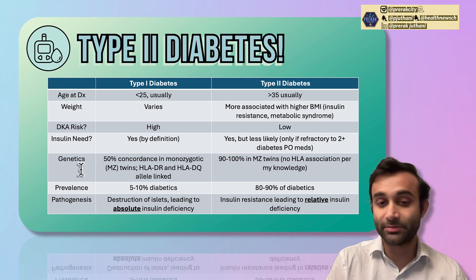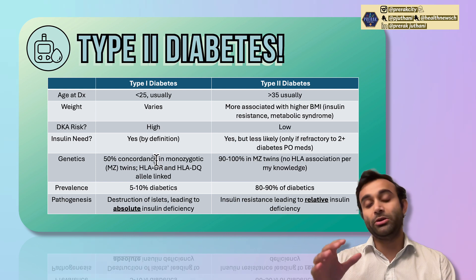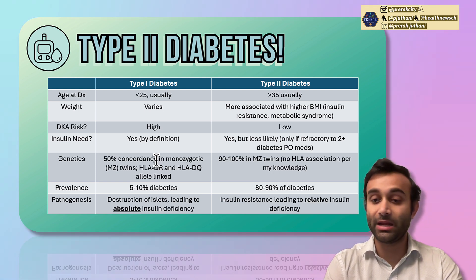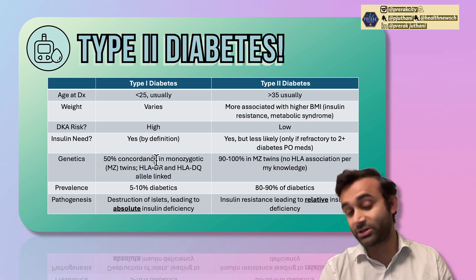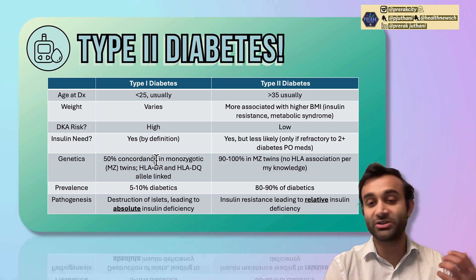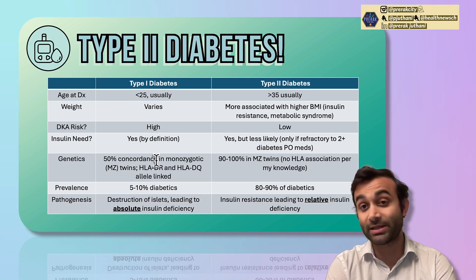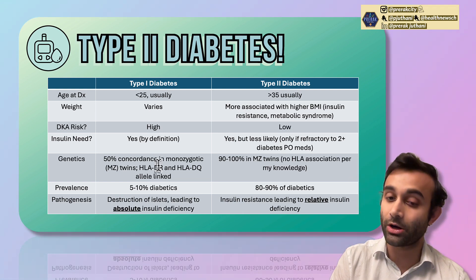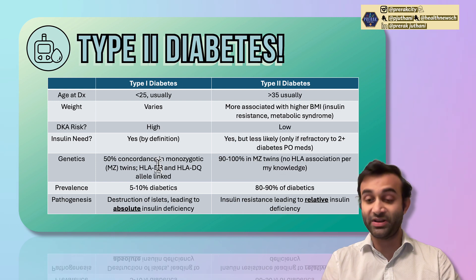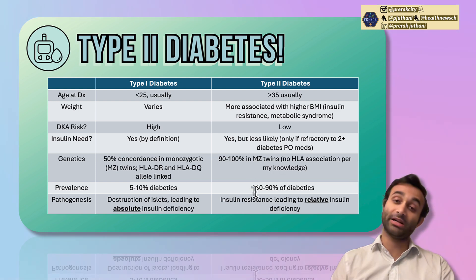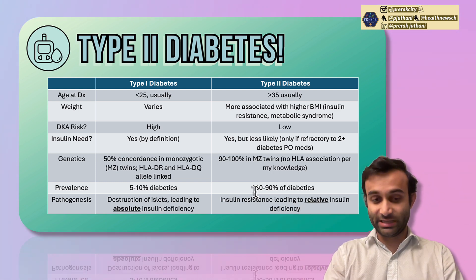One thing that may surprise you is that type 2 diabetes is actually more genetic than type 1 diabetes. When you look at monozygotic twins — individuals with the exact same genetic makeup — about 90 to 100% of them both develop type 2 diabetes, as opposed to only 50% in type 1 diabetics. That tells you there's much more of a genetic predisposition to type 2. However, there are haplotypes like HLA-DR and HLA-DQ that are associated with type 1 diabetes. About 80% to 90% of diabetics are type 2, so that's primarily what we should be learning.